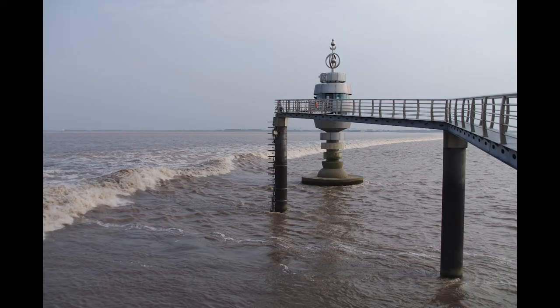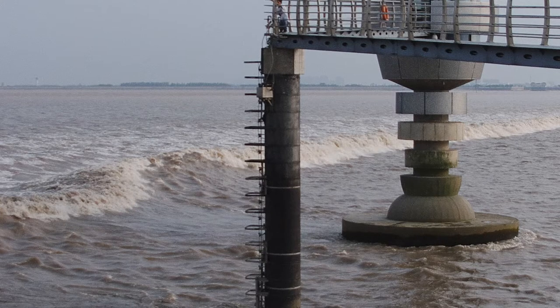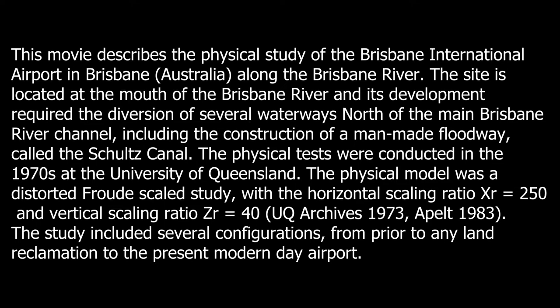The third photograph shows the tidal bore approaching the Qiantang River observation station at about the same period. This movie describes the physical study of the Brisbane International Airport in Brisbane, Australia along the Brisbane River. The site was located at the mouth of the Brisbane River, and its development required the deviation of several waterways north of the main Brisbane River channel, including the construction of a man-made floodway called the Shultz Canal. The physical tests were conducted in the 1970s at the University of Queensland.